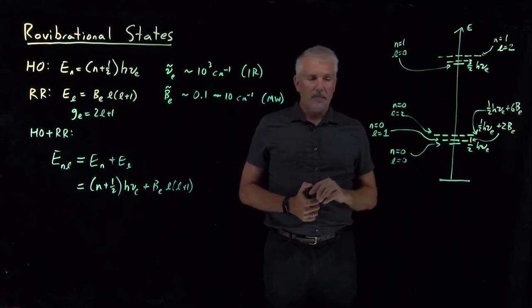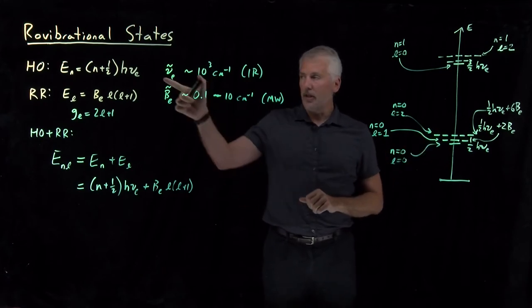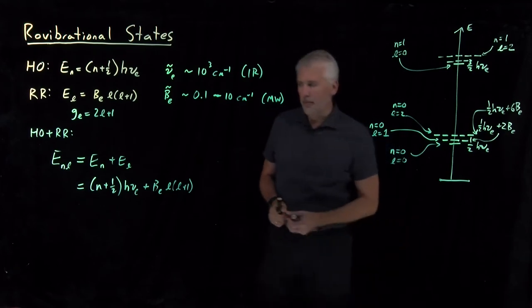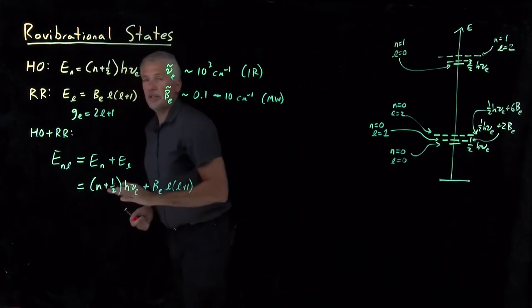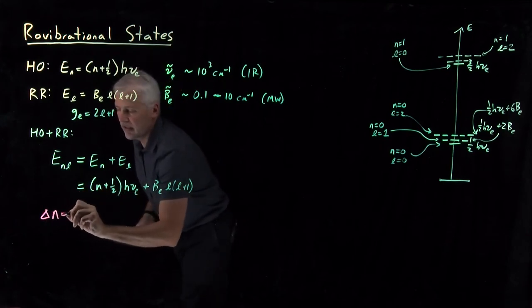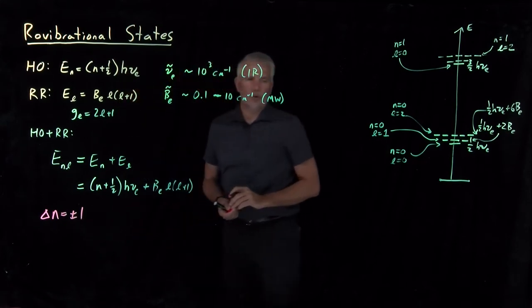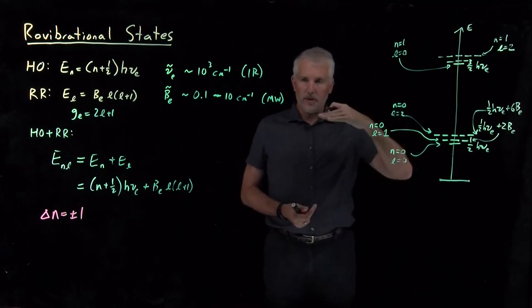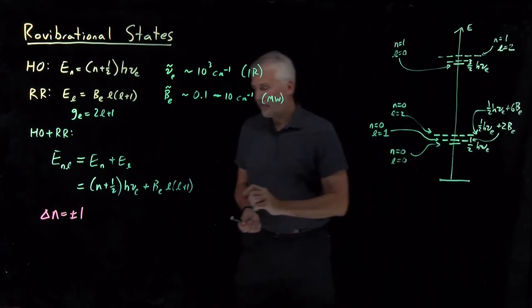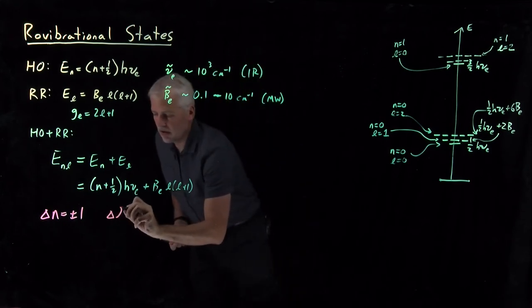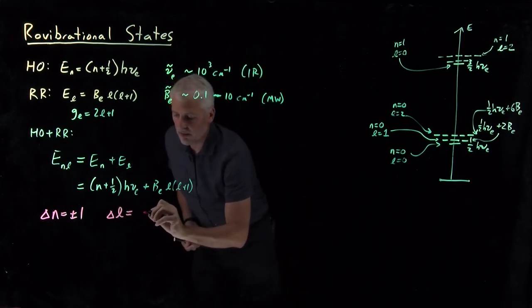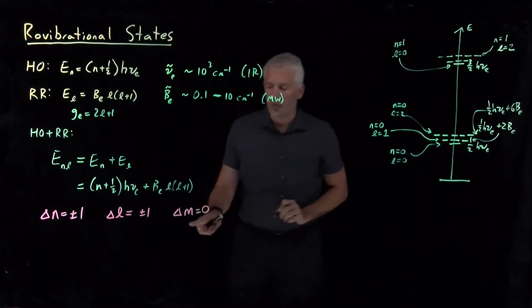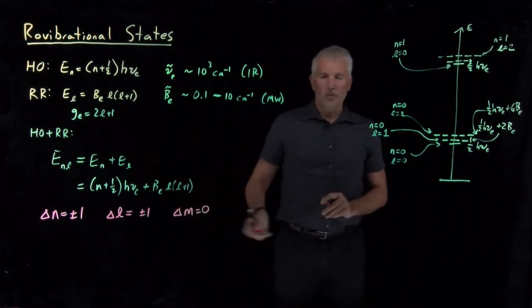That's what our energy ladder looks like — it's beginning to look more interesting and more complicated than either the harmonic oscillator or the rigid rotor on its own. Things get even more interesting when we remember that there are selection rules. The harmonic oscillator had a selection rule requiring that the vibrational quantum number change by one in the upward or downward direction, but no more. There was also a selection rule for the rotational quantum numbers: l had to change by plus or minus 1, and the magnetic quantum number — the one giving rise to degeneracy — was not allowed to change.